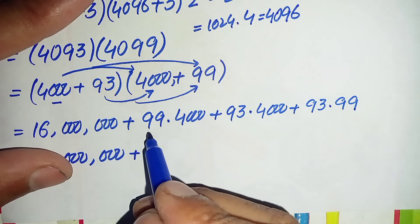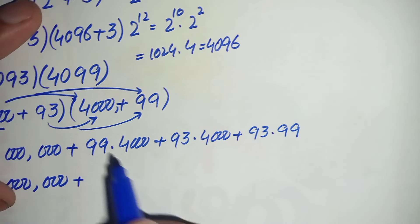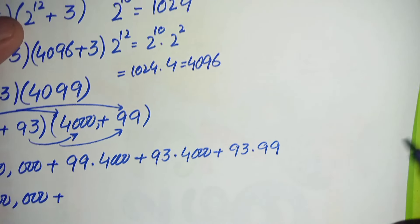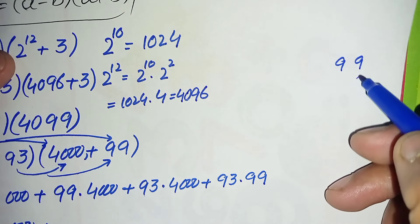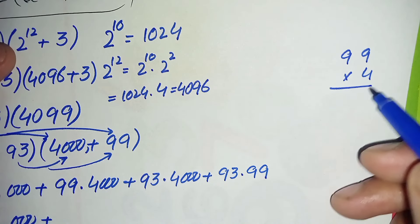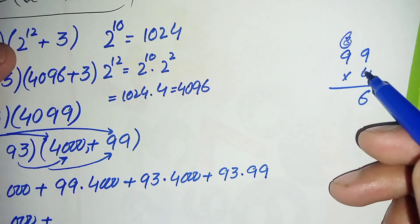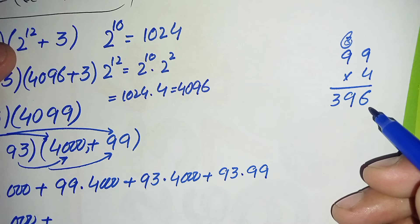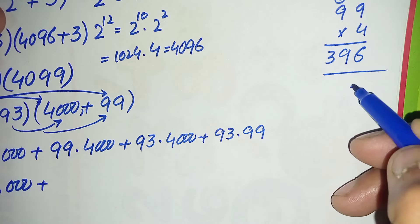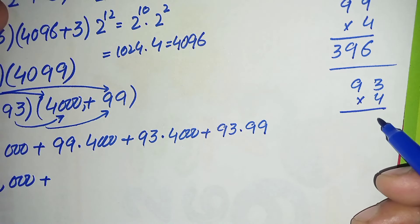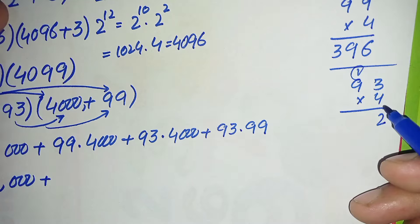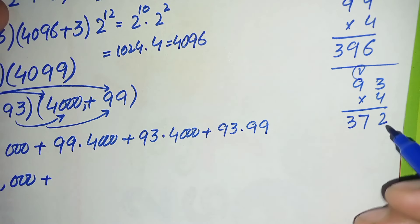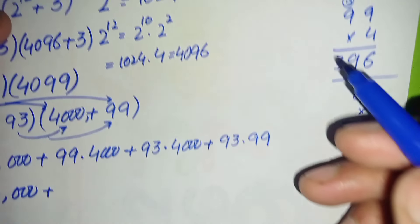Next we will multiply the cross terms. First, 99 times 4: 9 times 4 is 36, carry 3; 9 times 4 is 36, plus 3 is 39. So 99 times 4000 gives 396,000. Then 93 times 4: 4 times 3 is 12, carry 1; 9 times 4 is 36, plus 1 is 37. So 93 times 4000 gives 372,000.